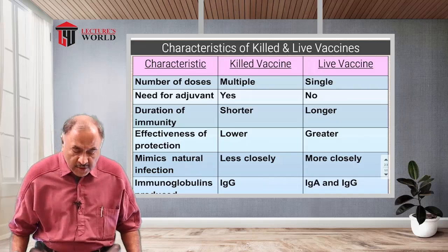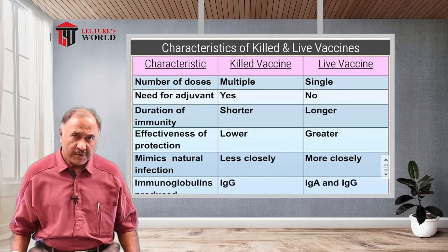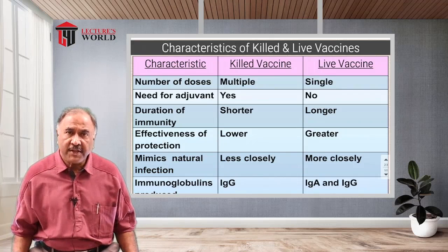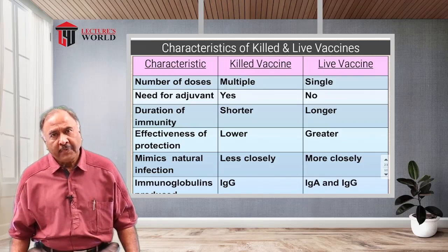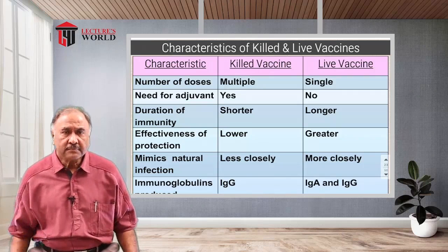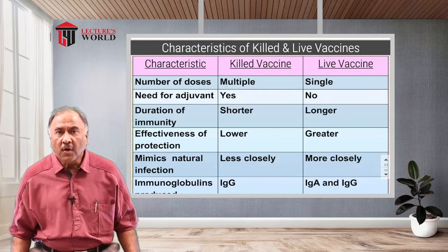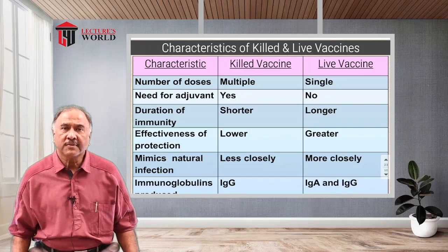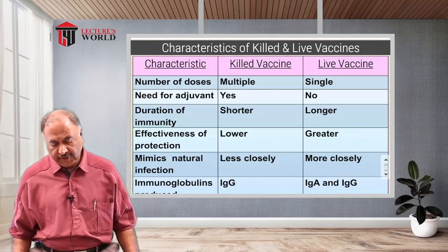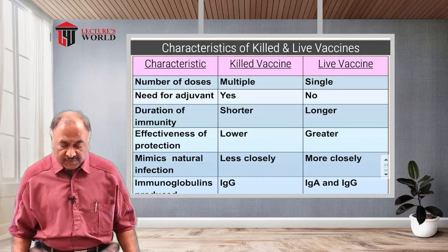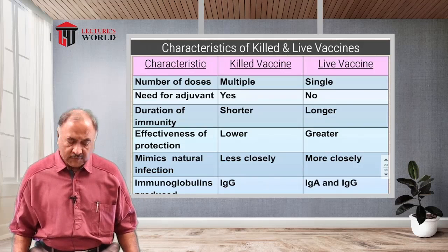Next is the duration of immunity. In the case of killed vaccines, the duration is naturally shorter, because since they are killed, they will be eliminated from the body by various mechanisms within a short time. In the case of live vaccines, immunity lasts for a longer period as the organism keeps multiplying in the body. Then, effectiveness of protection: in the case of killed vaccines, the effectiveness is lower compared to live vaccines.